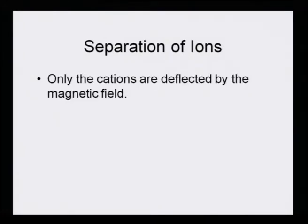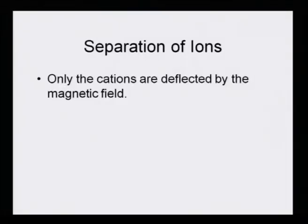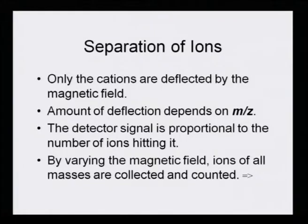Separation of ions: the separation of ions and their reaching the detector is governed by the mass-to-charge ratio — smaller ones will reach first, then medium ones, then the highest. Only cations are deflected by the magnetic field because charged particles take a trajectory movement due to the electrical and magnetic fields they create, helping them move toward the detector. The amount of deflection depends on m/z.